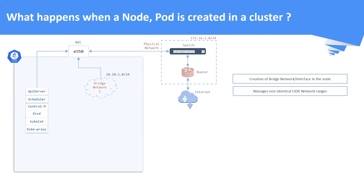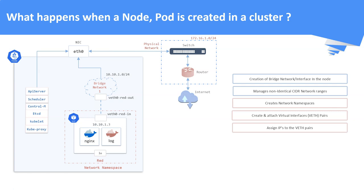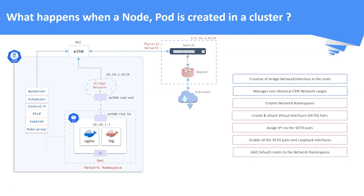What happens when a pod is created? As the first step, a network namespace is created along with the pod. Second, virtual Ethernet pairs are created — one end is attached to the pod and the other end to the bridge network. Third, an IP address is assigned to the pod. Fourth, all interfaces including the loopback interface are activated. Fifth, IP table rules are added to the network namespaces so the pod can reach the outside world. Finally, IP table rules and traffic forwarding are enabled in the base machine to forward traffic from the pod to the outside world.